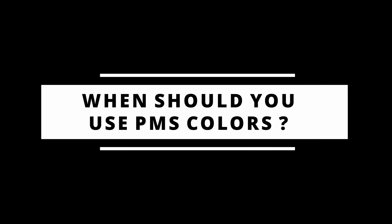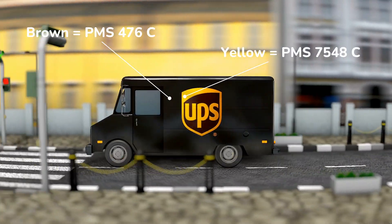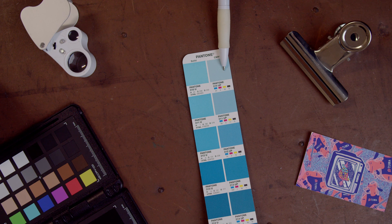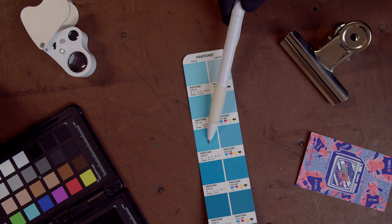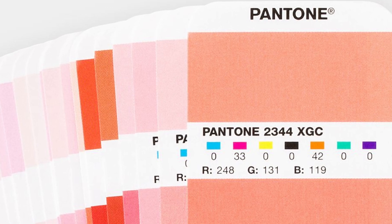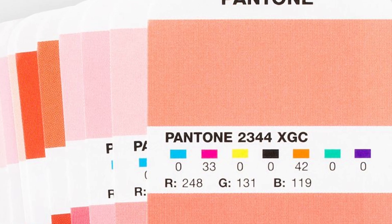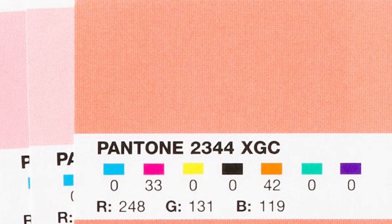PMS colors should be used in specific scenarios. As of the year 2000, it is estimated that around 30% of Pantone colors cannot be faithfully reproduced with 4-color process printing. More recently, Pantone did develop a 7-color process system called Extended Gamut, which adds orange, green, and violet in addition to cyan, magenta, yellow, and black, and this allows for more of the Pantone color palette to be accurately recreated.